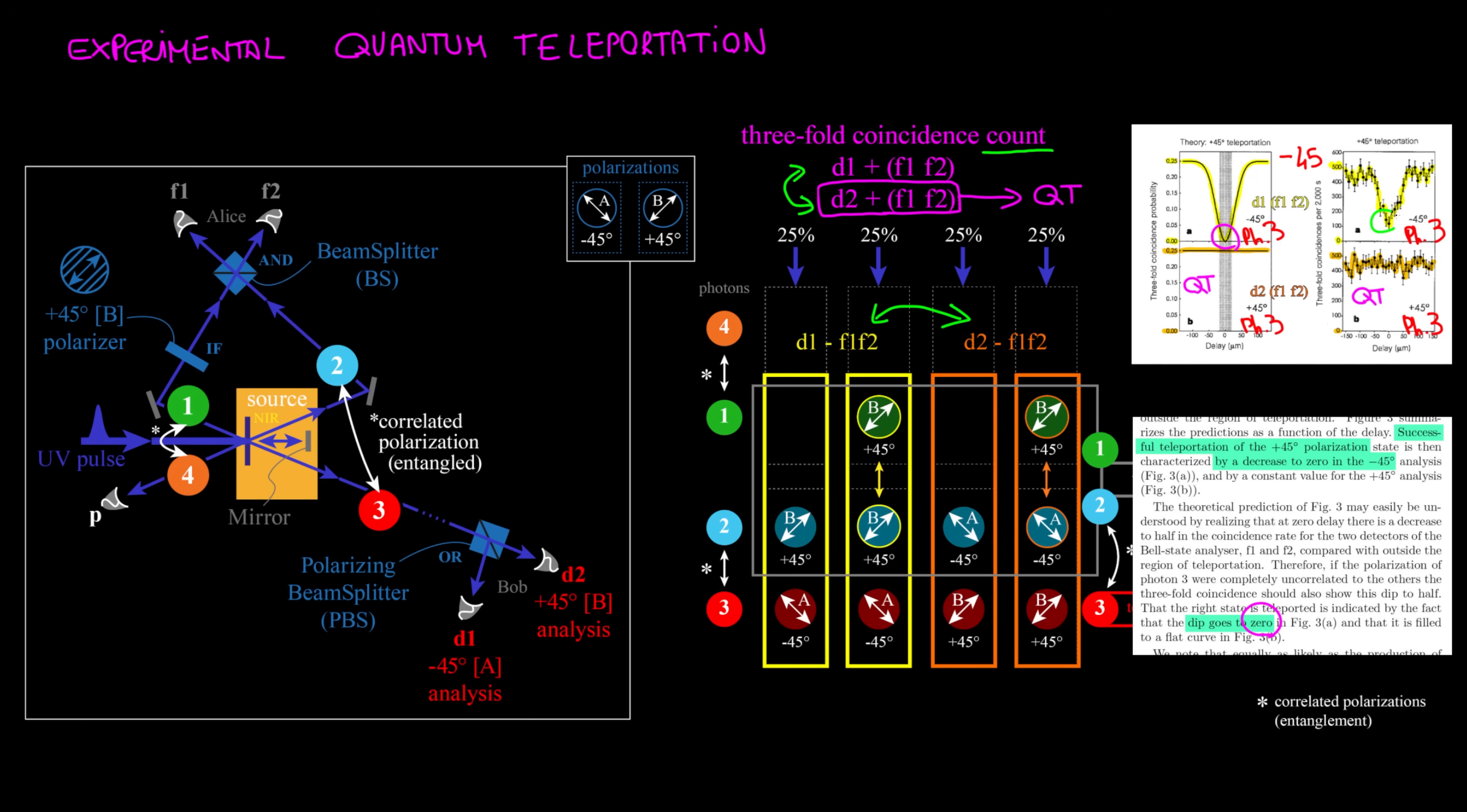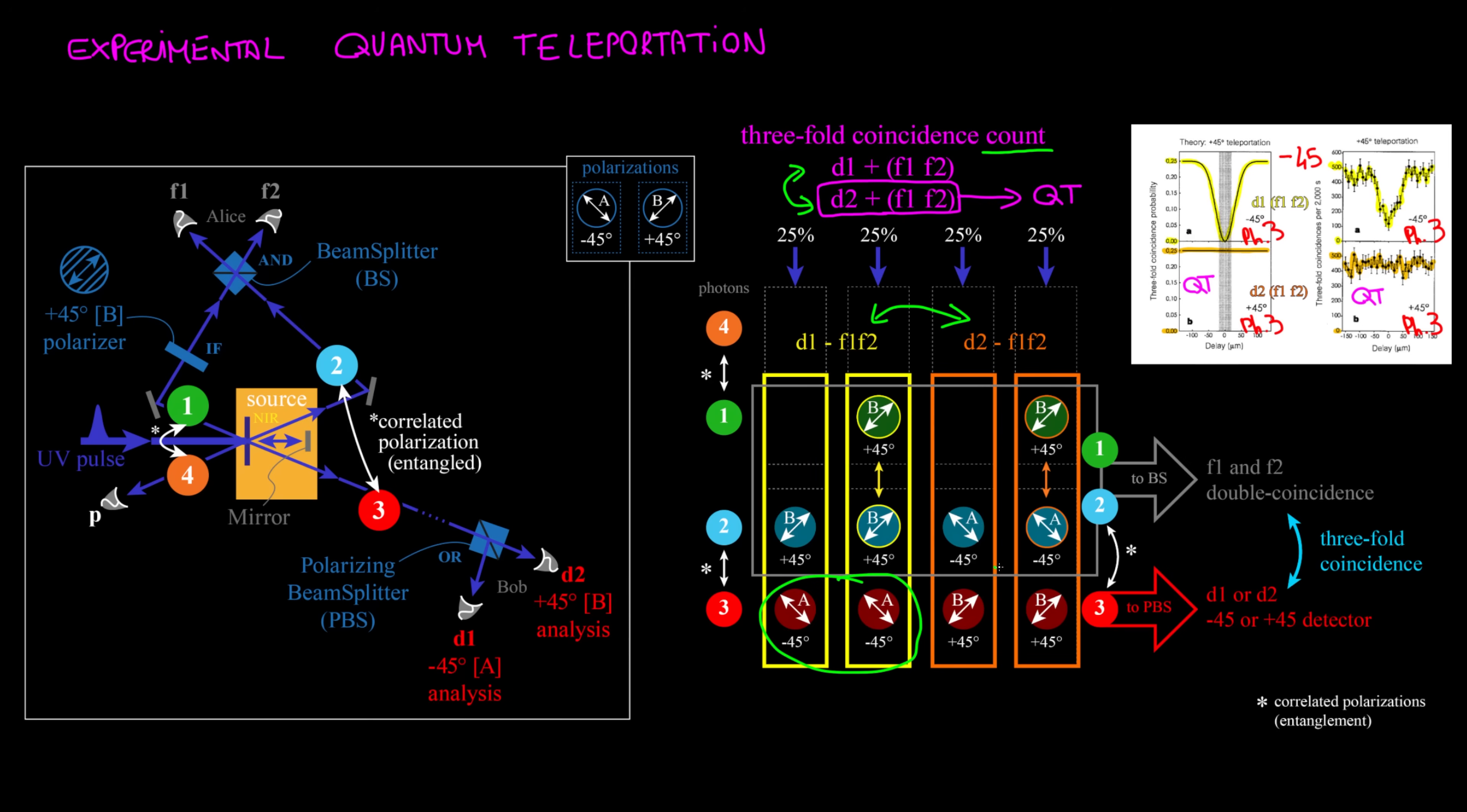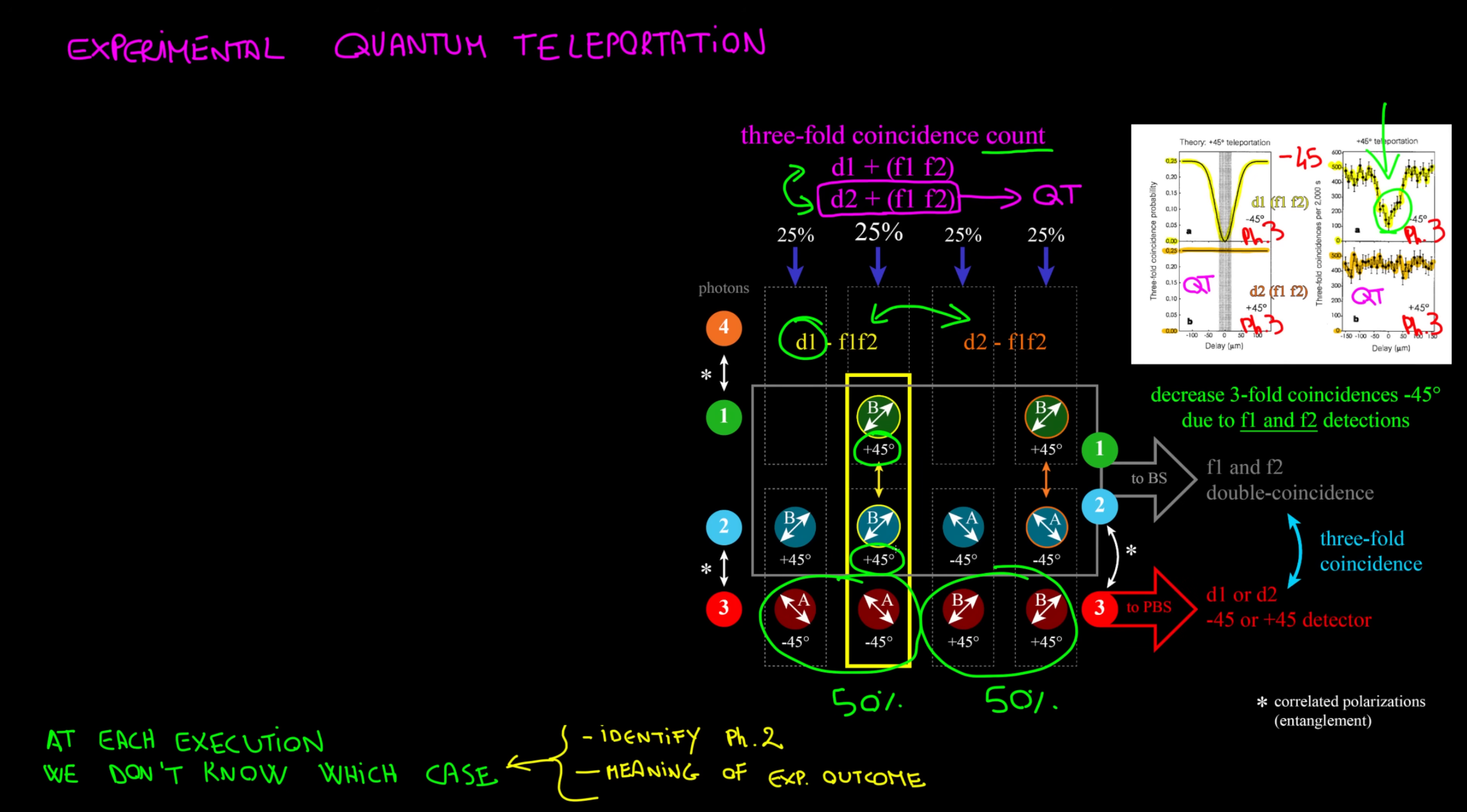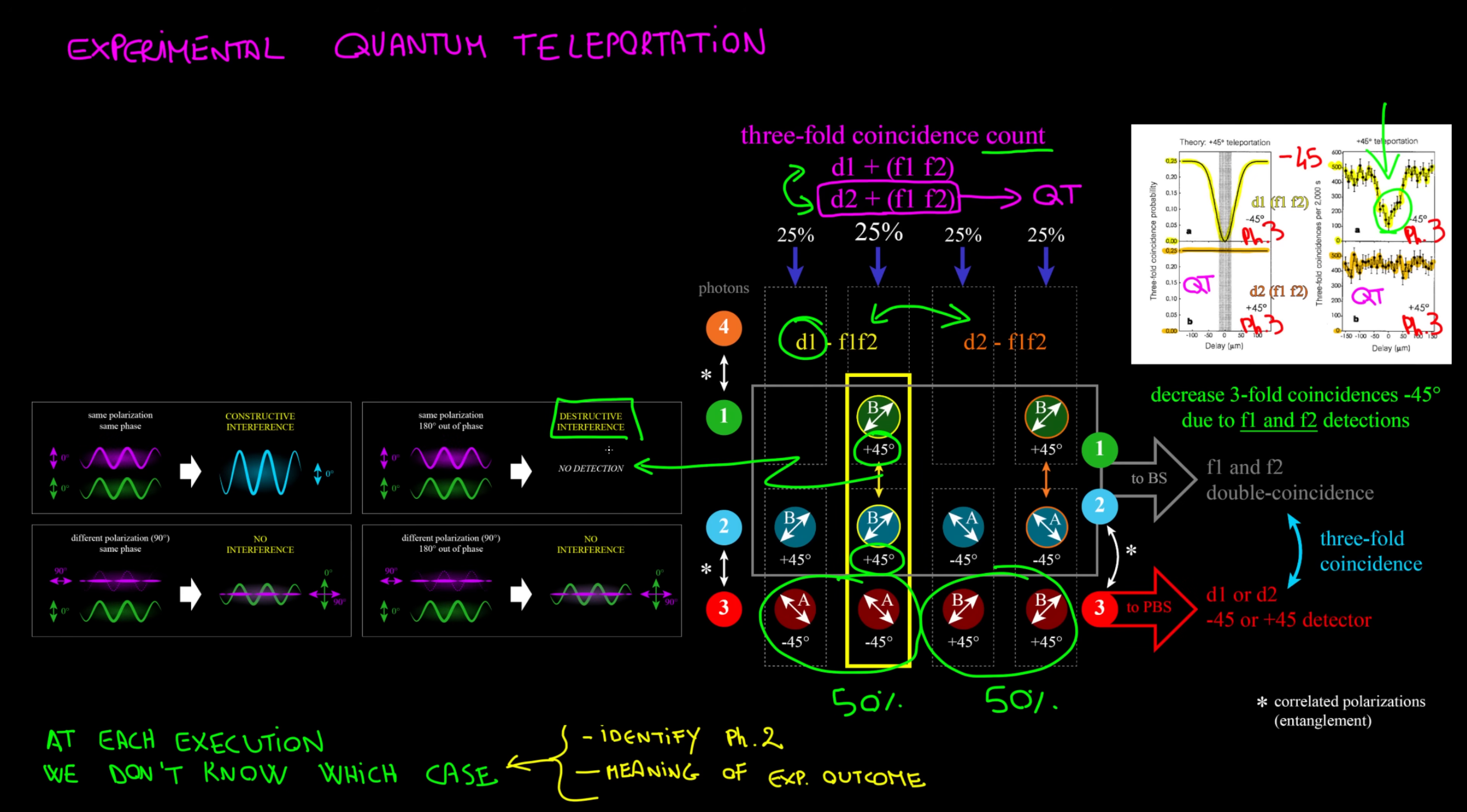Also this should be zero, but it's not. At each execution photon 3 is detected with a 50-50 chance, either in D1 or D2, and it's the reference. So this decrease in coincidences is because of F1 and F2 detections. Having photon 3 with the minus 45 polarization means that when the entangled photon 2 meets photon 1 at the beam splitter, they both have the same B polarization. Dip of coincidences can only happen here in D1 cases, because only now photon 1 and 2 have the same polarization and can destructively interfere when they are out of phase, affecting detections in F1 and F2 and the overall count of threefold coincidences.